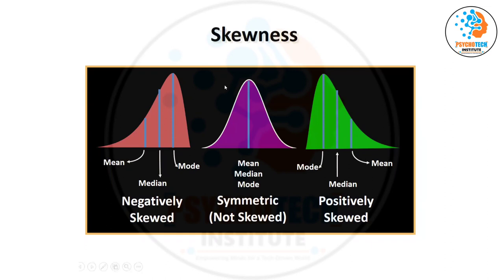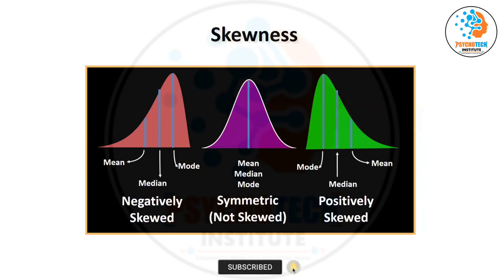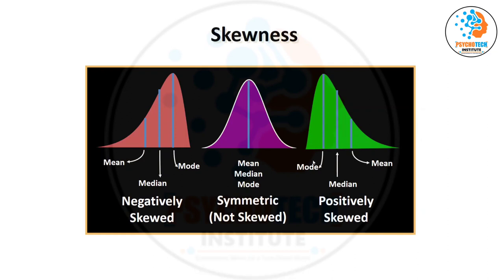If the data is parametric, meaning normally distributed, then there is no problem — mean, median, and mode are all equal. But if the data is skewed, either positively or negatively skewed, it's not normally distributed. In positive skew, mean is higher than median, which is higher than mode. In negative skew, mode is higher than median, which is higher than mean.